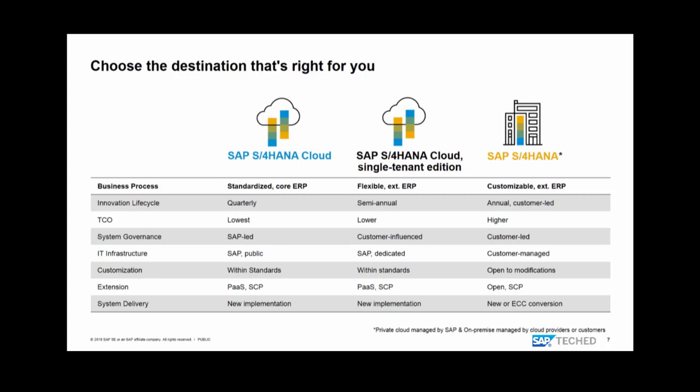The innovation lifecycle is different too. S/4HANA Cloud offers quarterly releases; in Single Tenant Edition we have two releases per year; and in S/4HANA On-Premise, we offer one major release per year. From a governance and IT infrastructure perspective there are also differences. Customization is only allowed within standards in the cloud system, whereas in an On-Premise system we are even open to modifications.